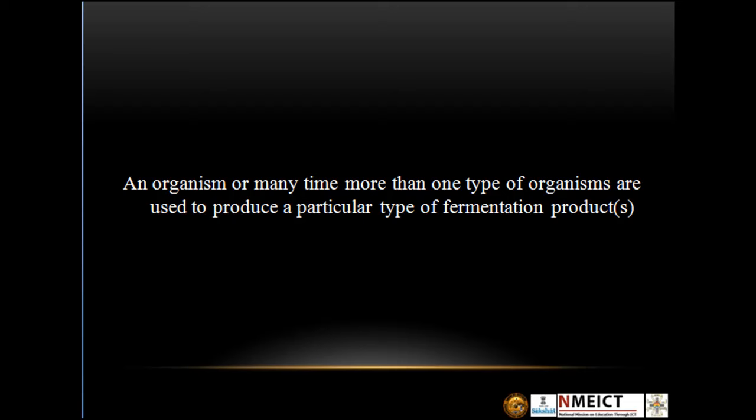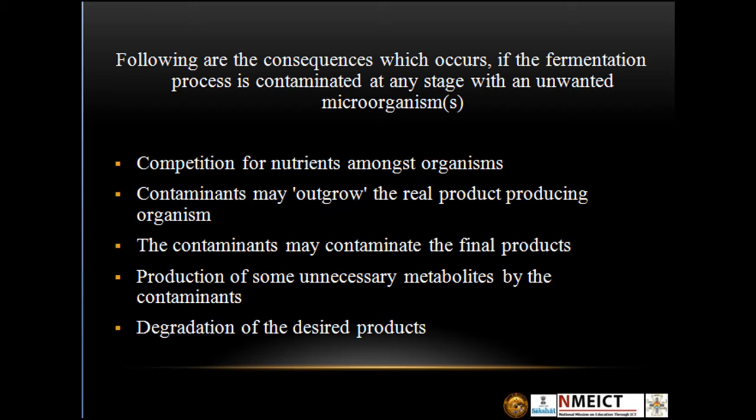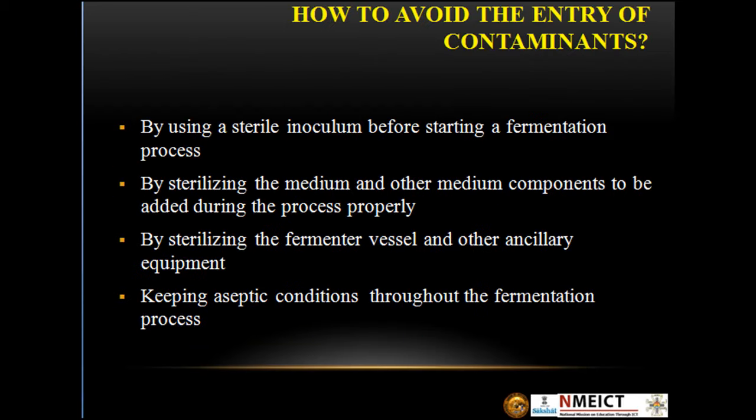An organism, or many times more than one type of organism, is used to produce a particular type of fermentation product. The following are consequences which occur if the fermentation process is contaminated at any stage with an unwanted microorganism: competition for nutrients amongst organisms, contaminants may outgrow the real product-producing organisms, contaminants may contaminate the final product, and production of unnecessary metabolites by contaminants along with degradation of the desired product.